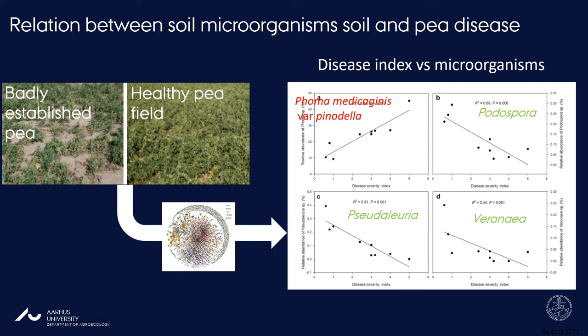What was of even higher interest was that some other organisms in the fields were responding in a different way to the disease severity index. Some microorganisms — Podospora, Sodaluria, and Veronia — actually reacted oppositely: they were abundant in healthy soils and not present in diseased soils. We didn't go further with this, but these three organisms might be very good candidates for biocontrol, or at least an indication that they could be used.